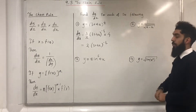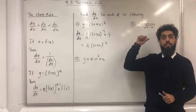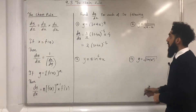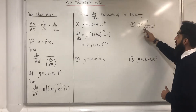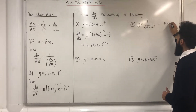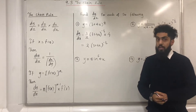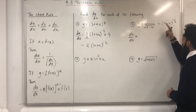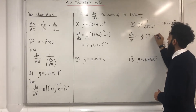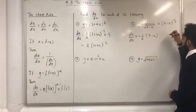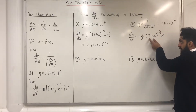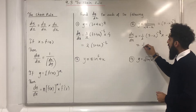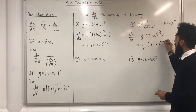Moving on to question number 2: y is equal to 1 over square root of (7 minus x). The first step is to rewrite this fraction using laws of indices from Year 1. This can be rewritten as (7 minus x) to the power minus one half. Now I'm ready to differentiate. dy over dx: bring down the power, giving minus one half times (7 minus x), subtract 1 from the power giving minus 3 over 2, multiplied by the derivative of the inside which is minus 1. Simplifying, we get one half times (7 minus x) to the power minus 3 over 2.